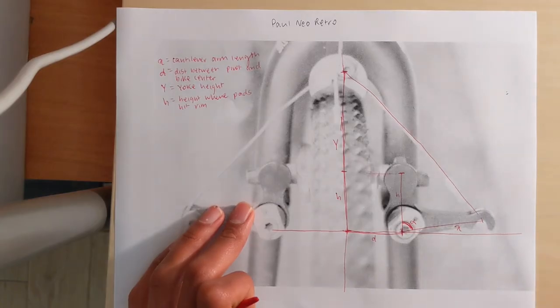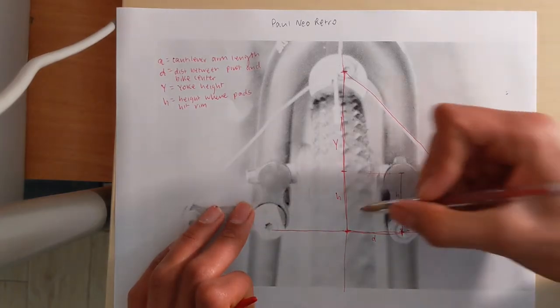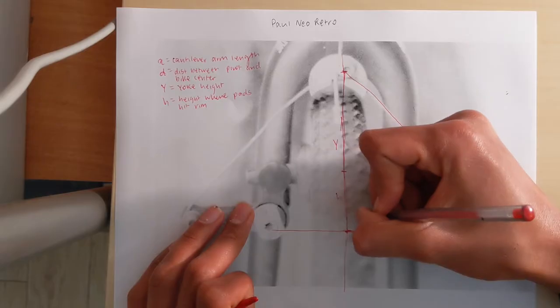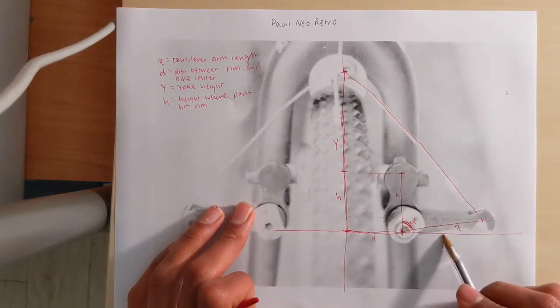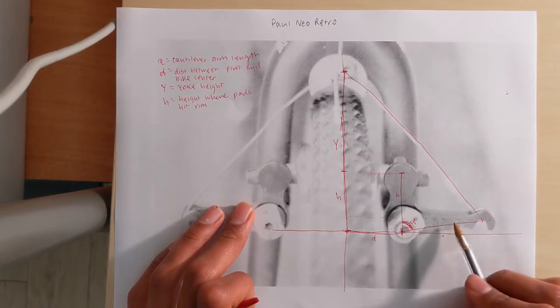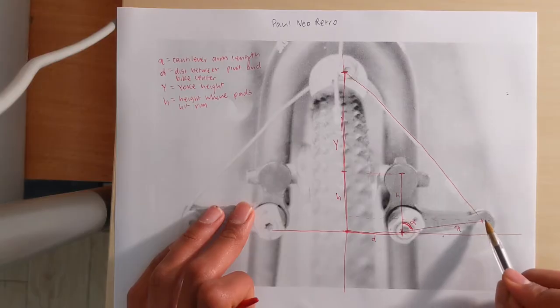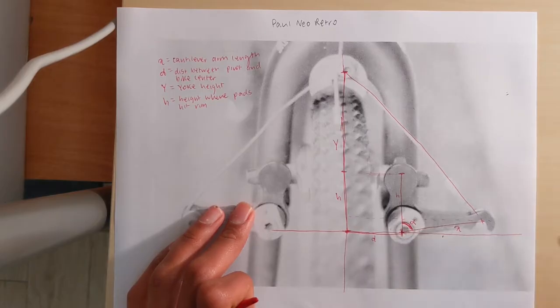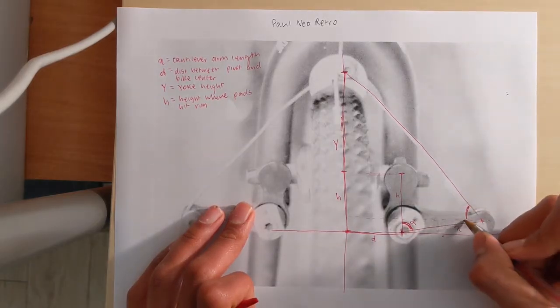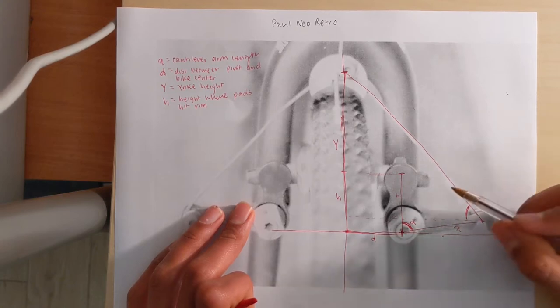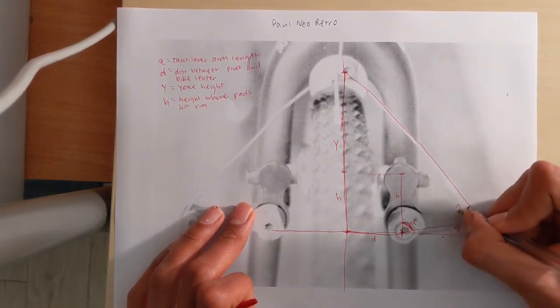That's our straddle wire. And now we can make a couple of angles off of that. This horizontal line that I'm drawing is parallel to our main horizontal except it goes through the anchor point instead of the pivot bolt. The angle between this new horizontal line and the straddle wire is going to be called gamma.